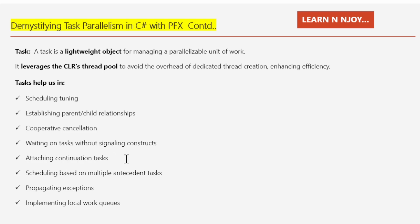Attaching continuation tasks means tasks can be linked to continuation tasks, enabling sequential execution or dependency-based workflows. Scheduling based on multiple antecedent tasks means task supports scheduling based on dependency with multiple antecedent tasks, enabling complex execution patterns. Propagating exceptions means tasks handle exceptions gracefully, propagating them through the task hierarchy for centralized error handling. Last but not least, implementing local work queues means tasks utilize local work queues to optimize the creation and execution of child tasks, reducing contention overhead and improving efficiency.